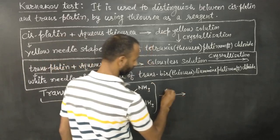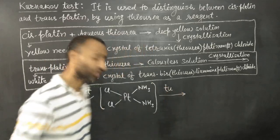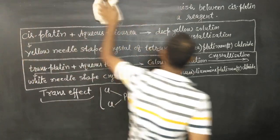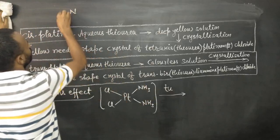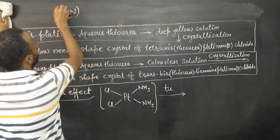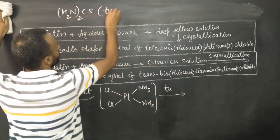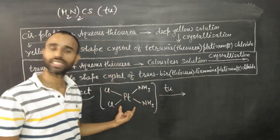When we use thiourea, what is thiourea? It is NH2 twice CS. This is called thiourea.